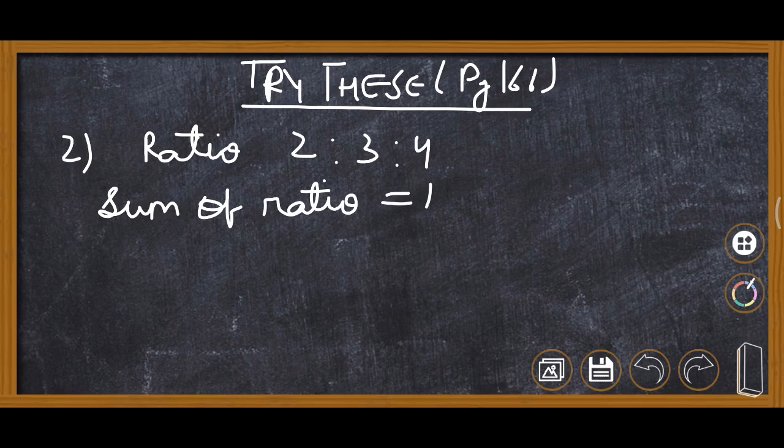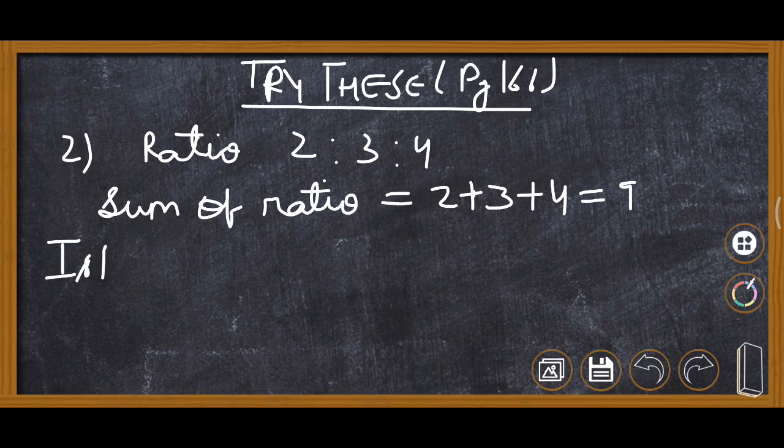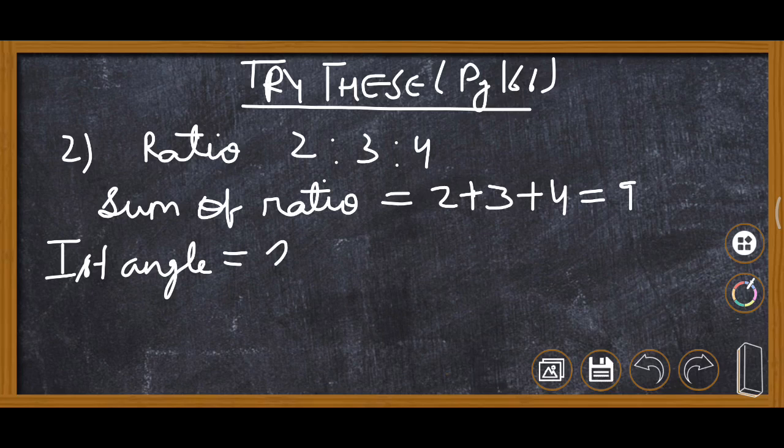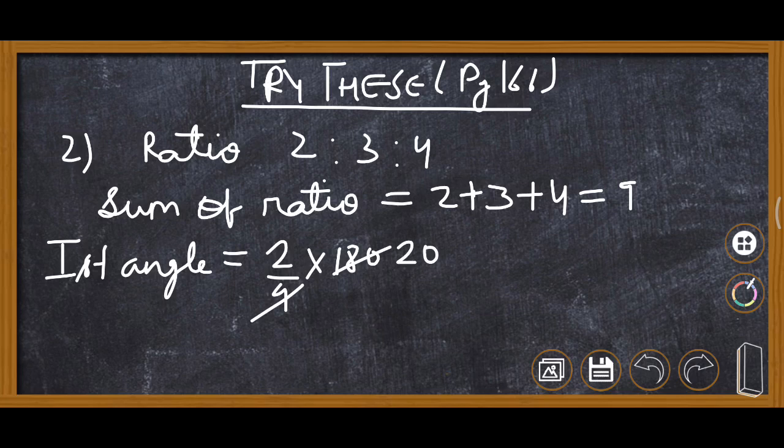It is 2 plus 3 plus 4 equals 9. Now one by one we will find each angle. So first angle it will be 2 upon total 9 into 180. Reduce 180 by 9, it is 20, so it is 40 degrees.